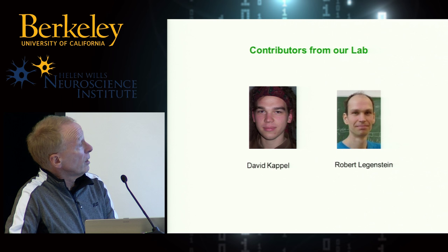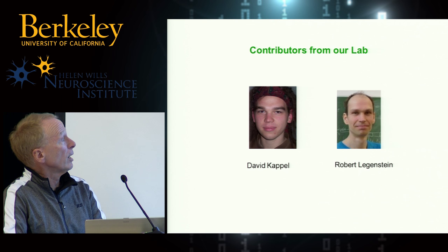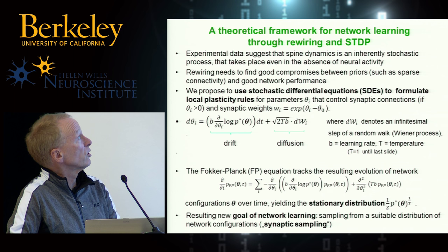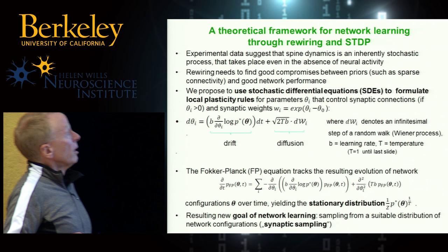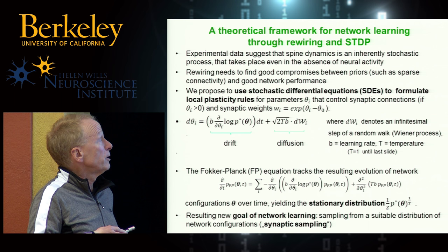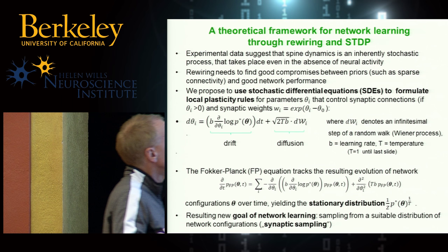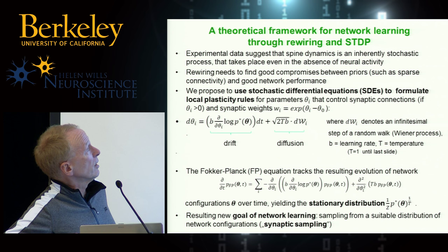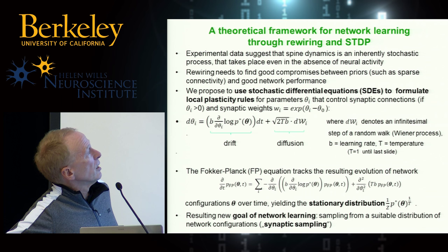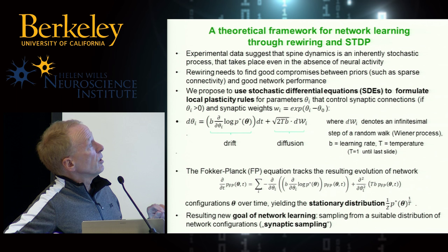All plasticity rules I'm discussing from now on will have this form. Technically, these are stochastic differential equations. The new term is this dW term — an infinitesimal step of a random walk — which just goes up and down, wandering a little bit from zero. You also have a parameter β which is just a learning rate regulating the timescale. There is another parameter τ which is interesting because it only scales this noise term relative to the plasticity term. I will assume τ equals 1 for now.